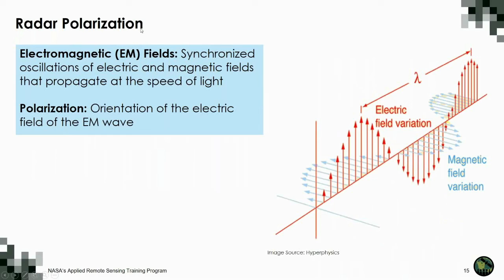An electromagnetic field is a synchronized oscillation of an electric and a magnetic field which propagates at the speed of light. The EM wave propagates because the electric field recreates the magnetic field and vice versa — they are coupled as the wave propagates. In microwave remote sensing, the reference we use for polarization is the orientation of the electric field of that EM wave.